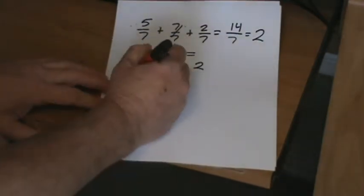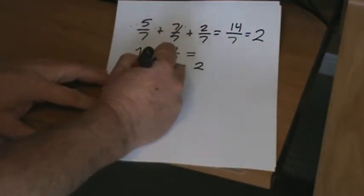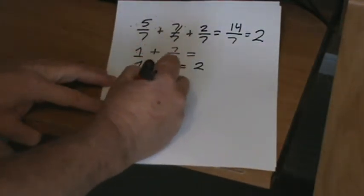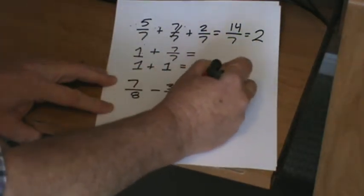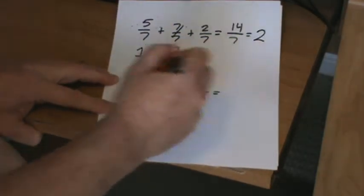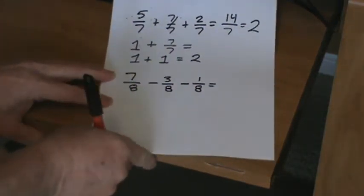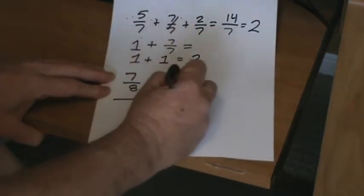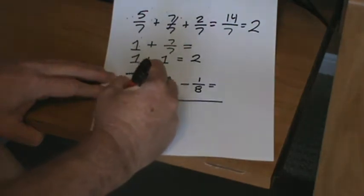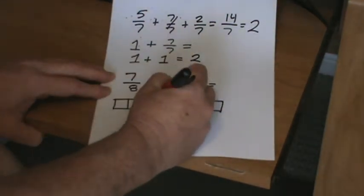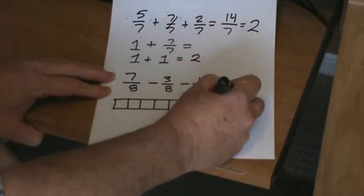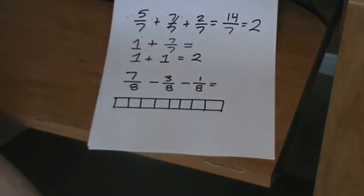Let's go to our next one, and it is a subtraction problem: 7/8 - 3/8 - 1/8. Let's just have a little fun. Let's make a tape diagram. We're starting out with eighths, right? 1, 2, 3, 4, 5, 6, 7, 8.